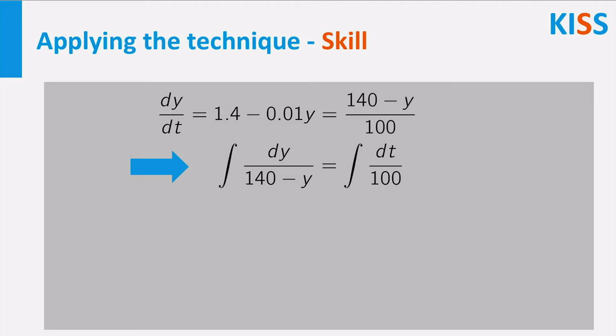Next, we put integral signs on both sides, and we try to find the desired antiderivatives. These are relatively straightforward, but note the minus sign on the left. It comes from using the substitution U is equal to 140 minus Y. Check this yourself.